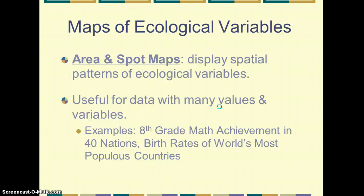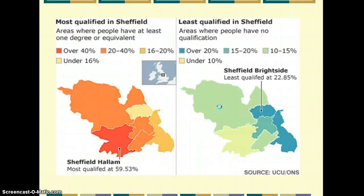And then finally, if we think about maps of ecological variables, we can display spatial patterns of ecological variables. It's very useful. And it looks like this. We see it a lot. It's simply spatially representing the data. Hope this has been helpful. I'll see you in the next screencast.